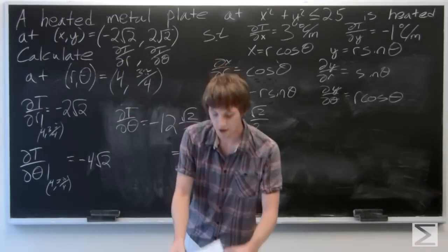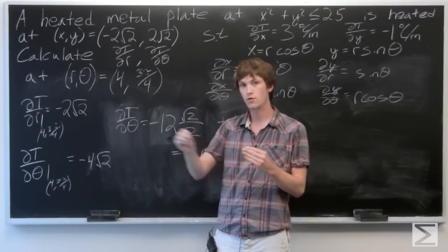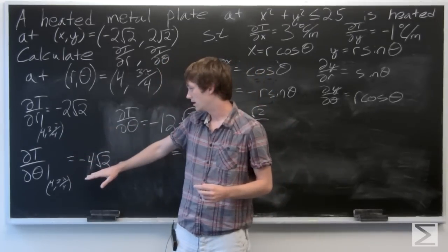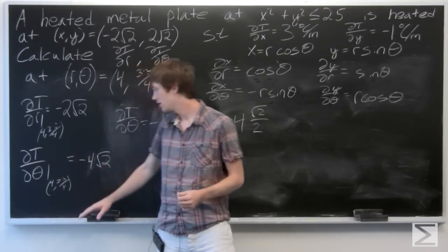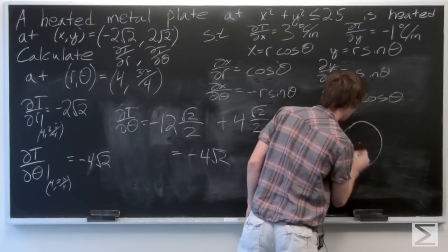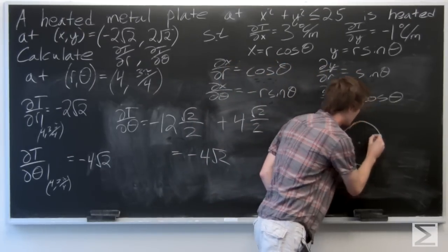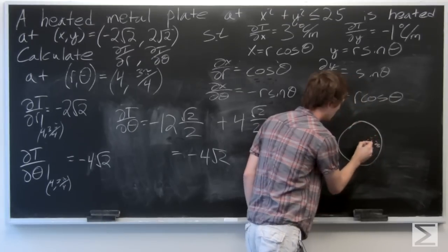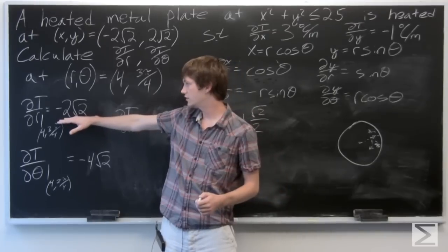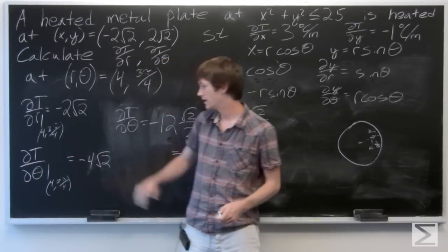So now we want to know what these mean. The partial derivative of the temperature with respect to r is essentially the change in temperature as we move along the radius of the disk. The partial derivative of the temperature with respect to θ is the change as we move around in a circle along the disk. Our final answers are: ∂T/∂r = -2√2 and ∂T/∂θ = -4√2.